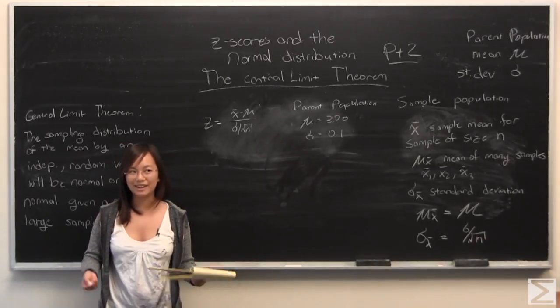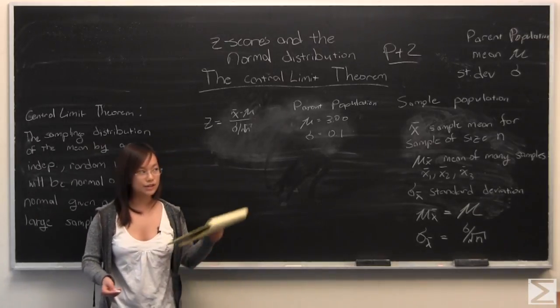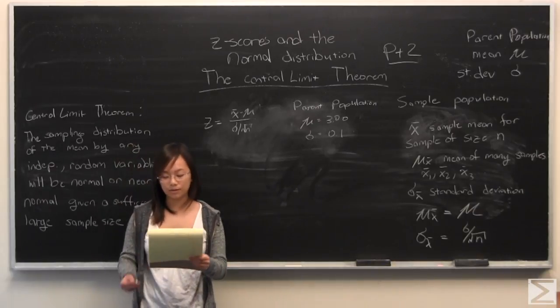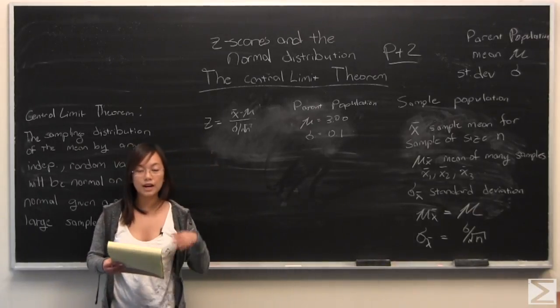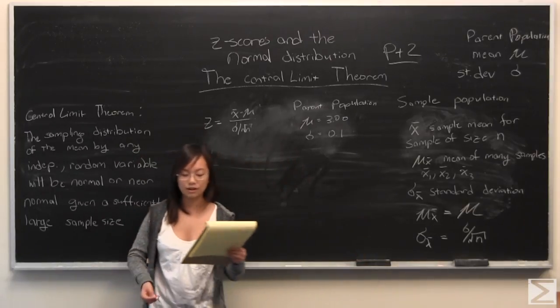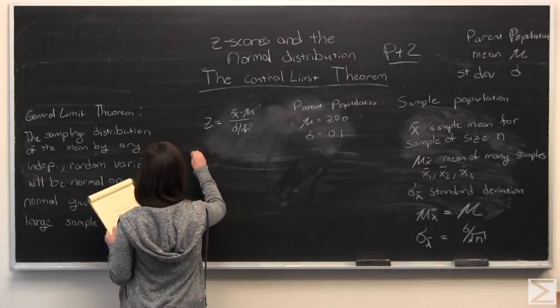So say you bought your own plant and you want to know how likely it is that after one year of growth, just like the population, that you will have a plant that is less than 2.9 feet. So you can actually figure that out using the central limit theorem, z-scores, and the normal distribution because of what we talked about before. So I'll write that down.